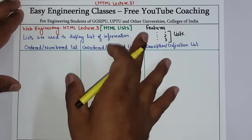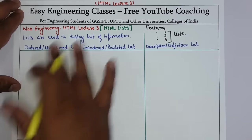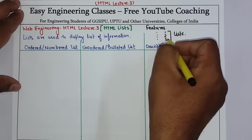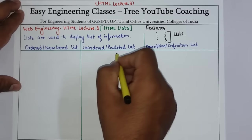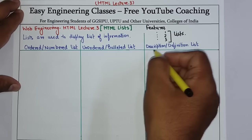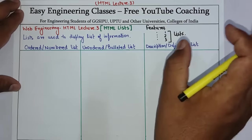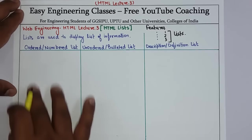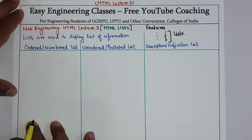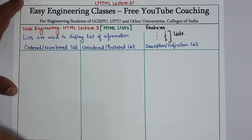There are three basic types of lists: ordered or numbered lists, like 1-2-3; unordered or bulleted lists; and description and definition lists. Now we will start with creating ordered and numbered lists.